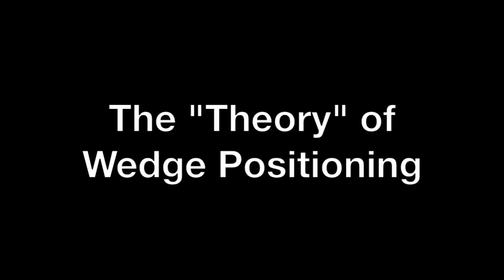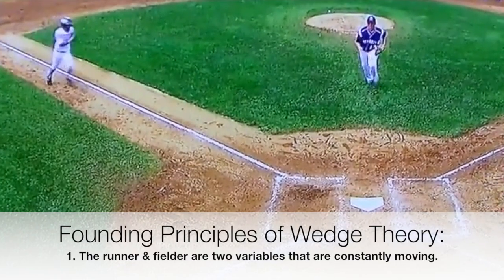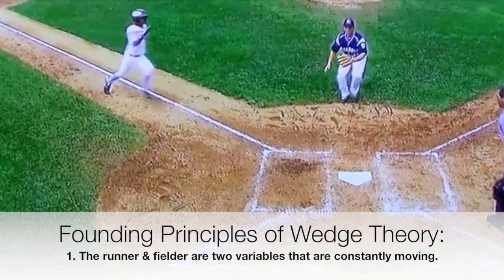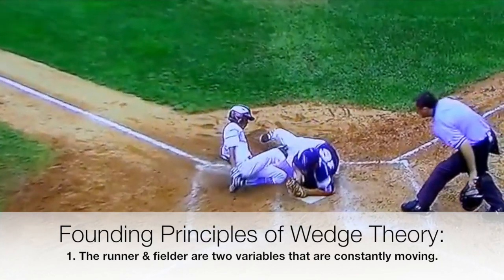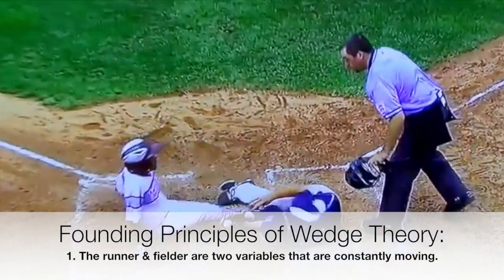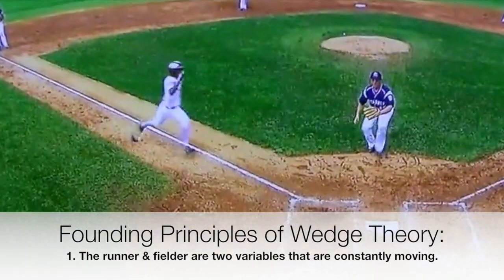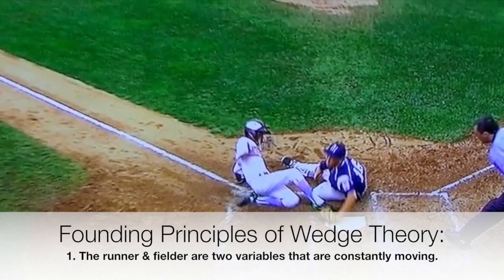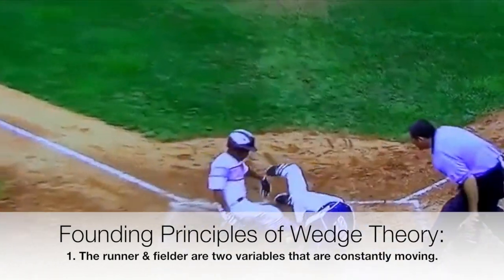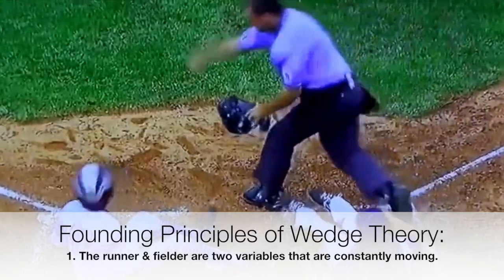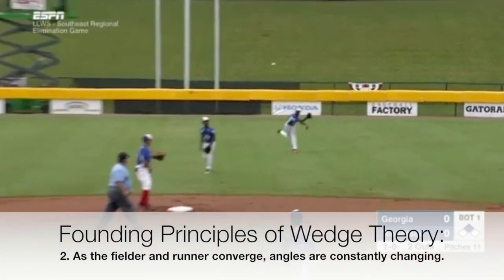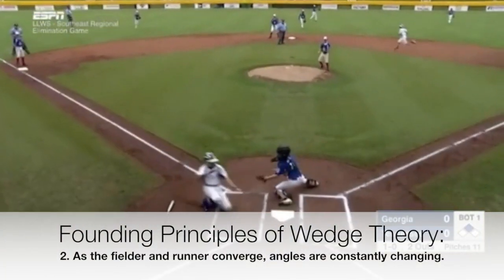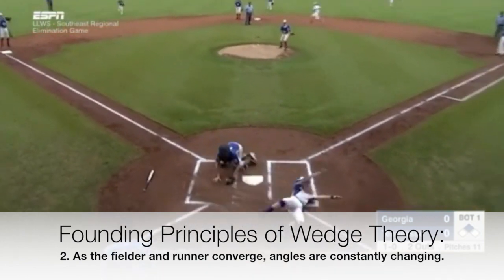The theory behind wedge positioning is rooted in the following principles. First, the fielder and the runner are the two variables in the play that are constantly moving. As the fielder is seeking to tag the runner and the runner is seeking to avoid the fielder, the angles of the play are constantly changing. And as the angle of the tag attempt changes constantly, our positioning must also do the same.